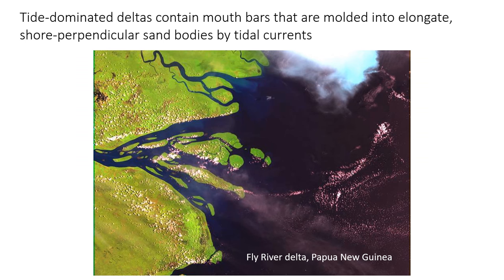Similarly, in tide-dominated deltas, the mouth bars can be reworked into more shore-perpendicular elongated sand bodies. In this situation, the delta plain may look similar to tidal flats or tidal estuary facies, with bidirectional crossbeds, flaser bedding, and inclined heterolithic stratification in the distributary channels. Again, the context provided by the overall facies succession — especially the underlying units — might be your best clue if you're dealing with a strongly tidally influenced delta plain environment.